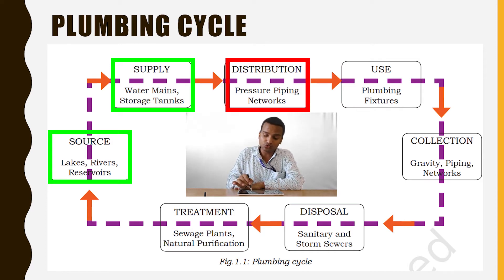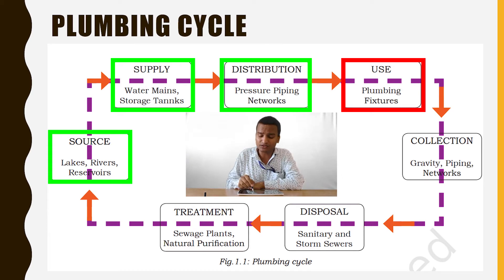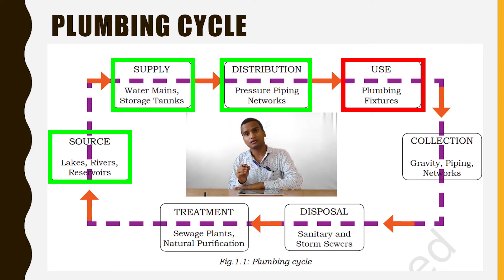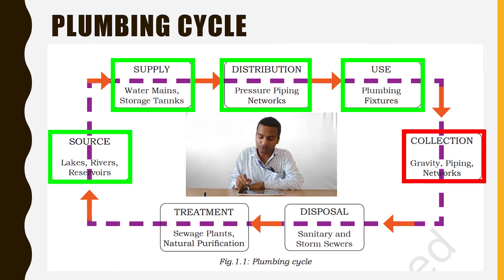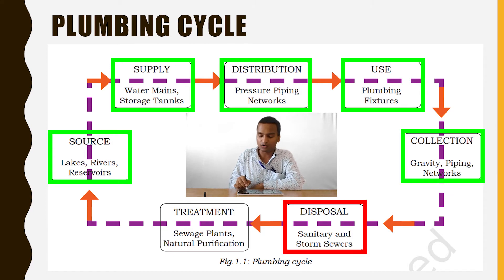When water goes to the users, there are plumbing fixtures like taps and faucets through which they can use it. After using, that water no longer remains potable — potable water means water which can be consumed. That water becomes wastewater which cannot be thrown anywhere. The wastewater has to be collected. Now the wastewater comes from top to bottom, so there is no requirement of pressure — it is very spontaneous, working under gravity. So that water travels from users to the point of collection through piping networks that work under gravity with no external pressure.